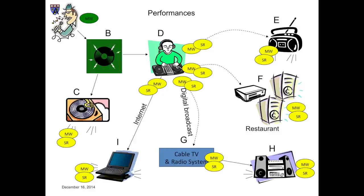A's performance in the studio is not public because it's done without an audience, and this doesn't fit either of the two definitions of public. Neither of the two performances — the musical work or the sound recording — is public when they occur in C's living room. The same is, of course, true of E's living room, H's living room, and I's living room. The radio station, however, is in a very different position. Every time it broadcasts a signal containing the song, it is publicly performing both the composition and the sound recording.